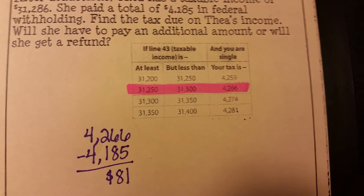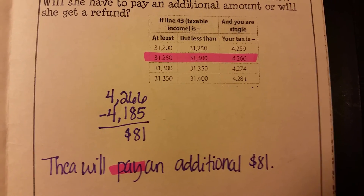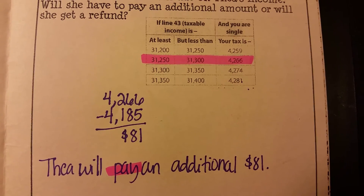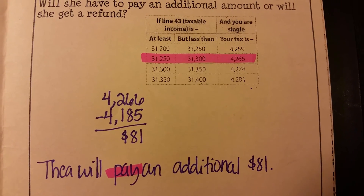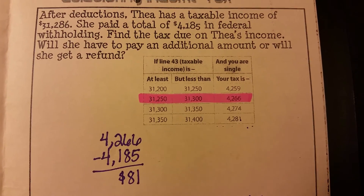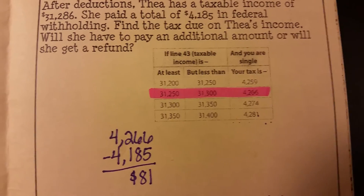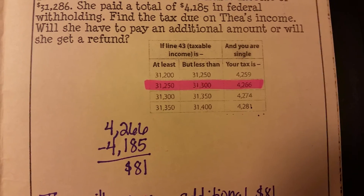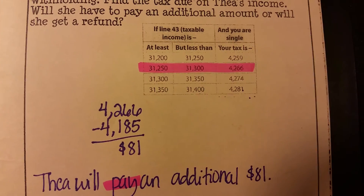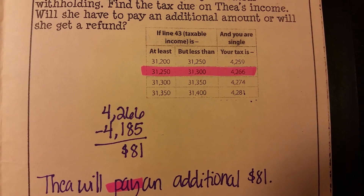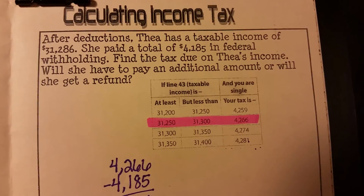What you and your partner should have come up with is she will have to pay an additional $81, because her total withholding did not reach the tax amount. So she has to pay an additional $81. That is how you calculate the total income tax.